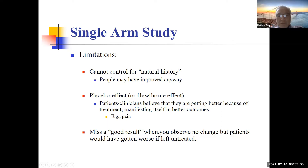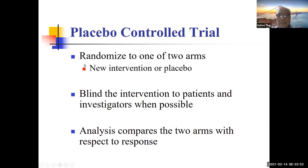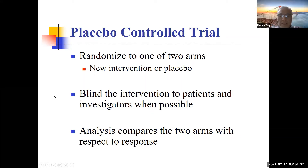You could also miss a good result when you observe no change, but patients would have gotten worse if left untreated. So we need a control group — to control for natural history and placebo effect. In a placebo-controlled trial, you randomize patients to one of two arms: a new intervention T, the test drug, or placebo P. The intervention is blinded to patients and investigators when possible.